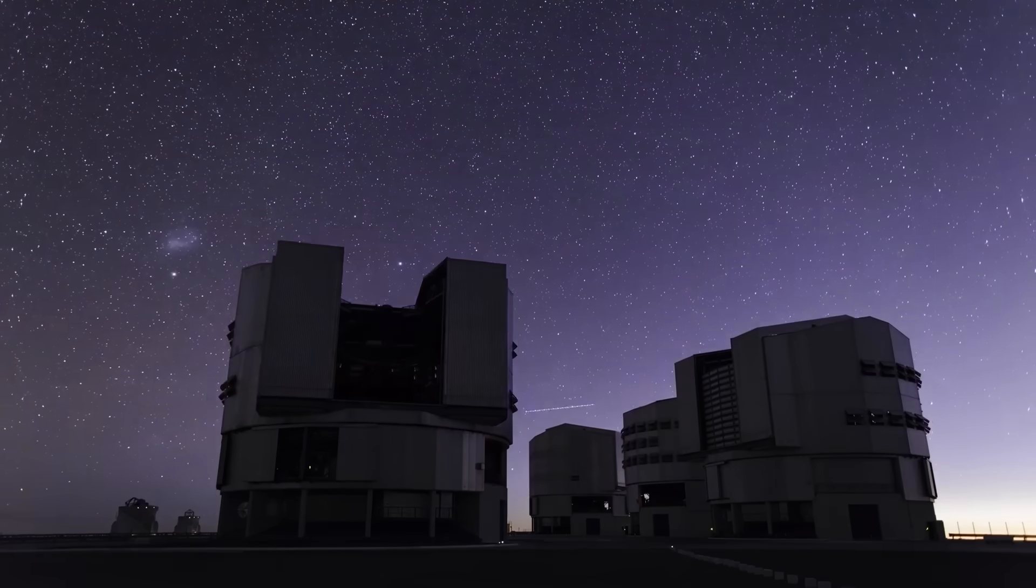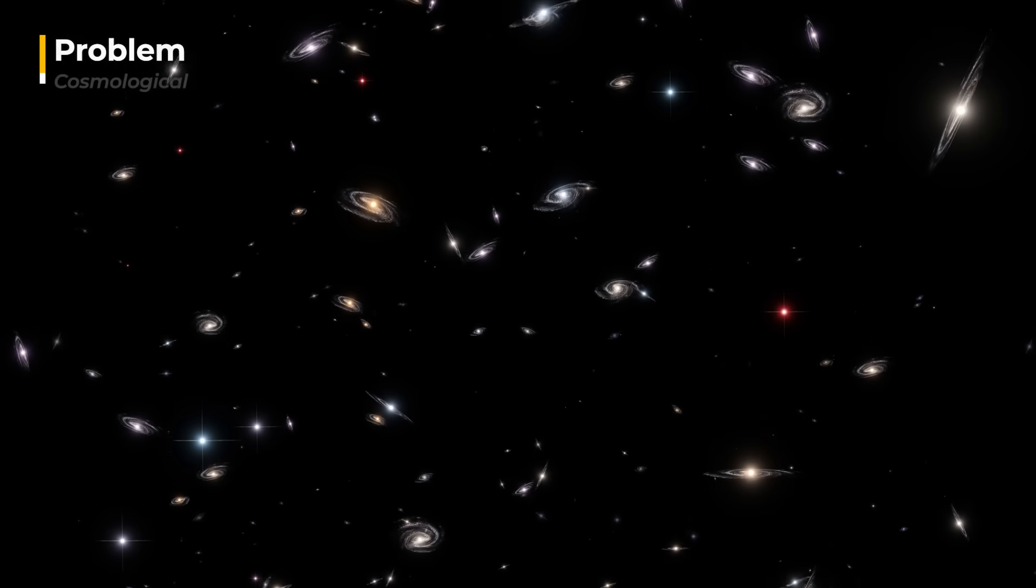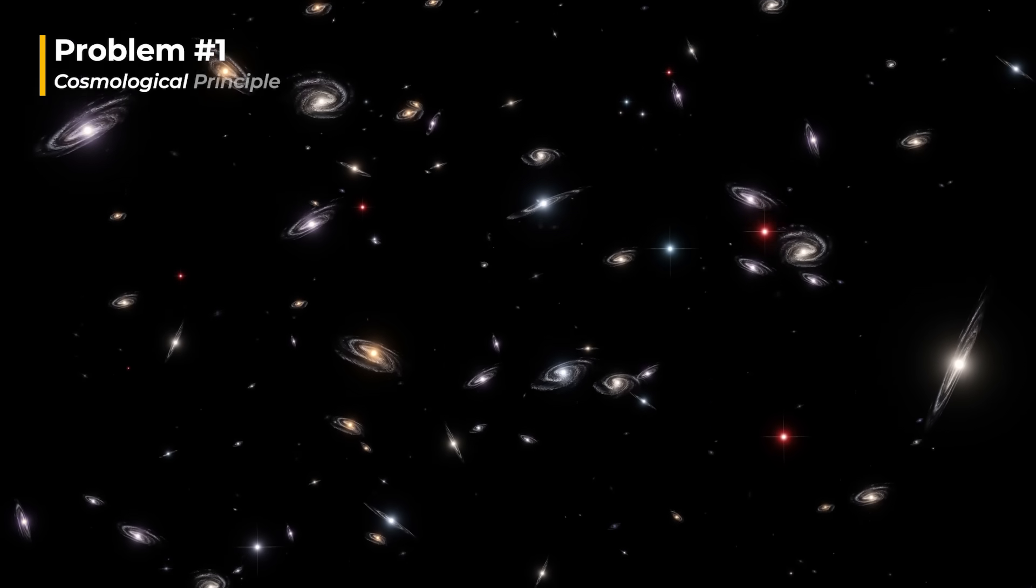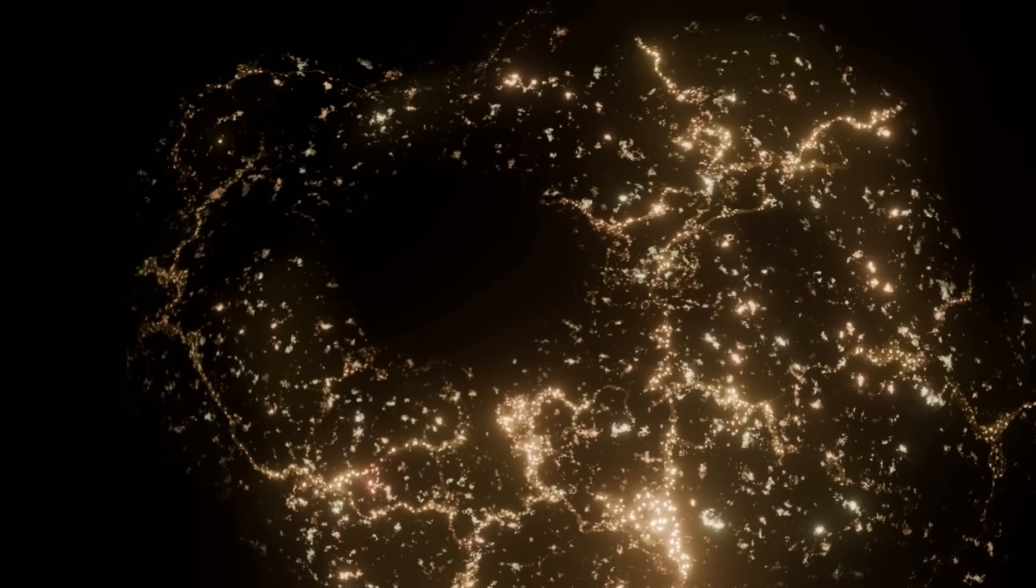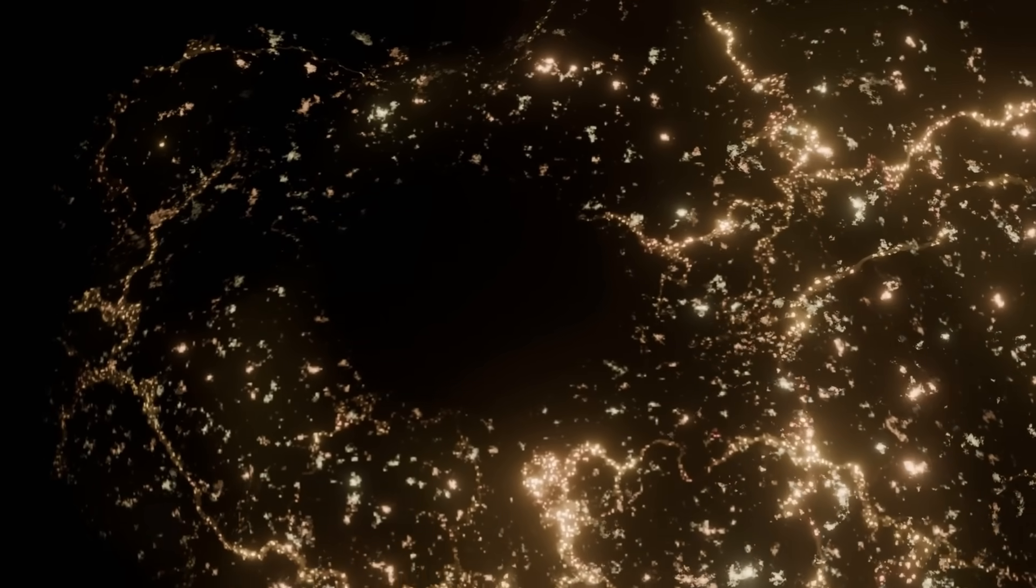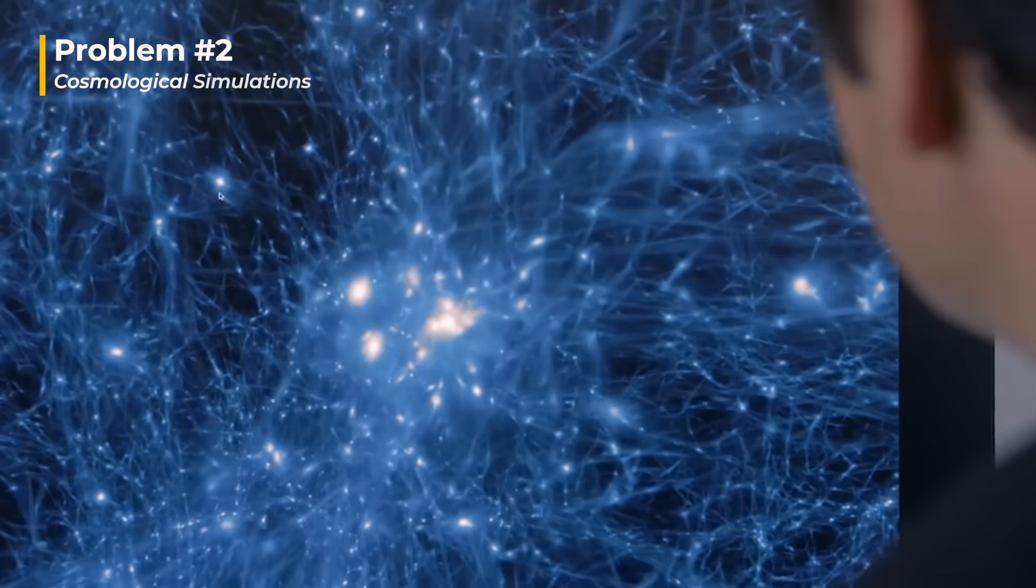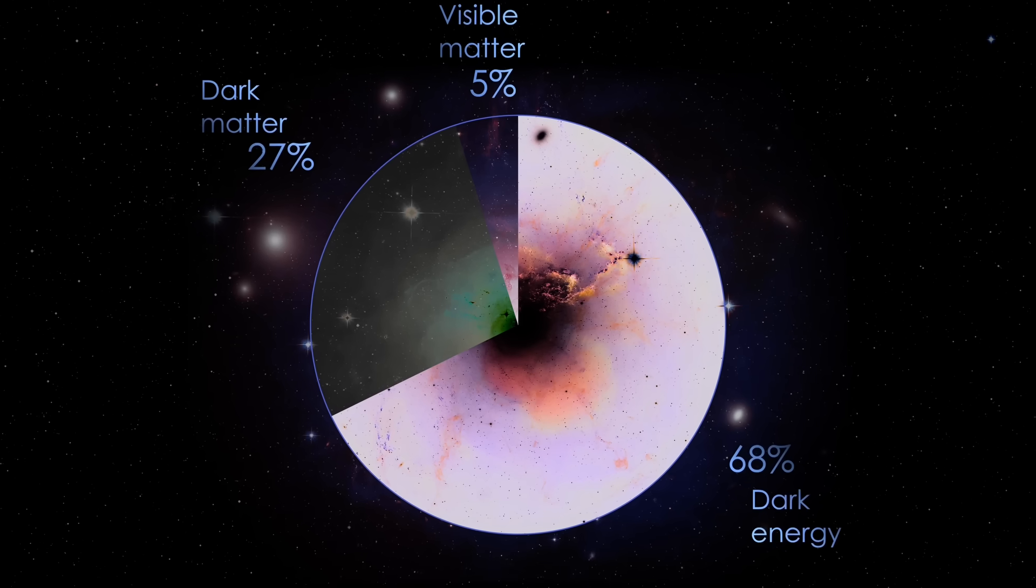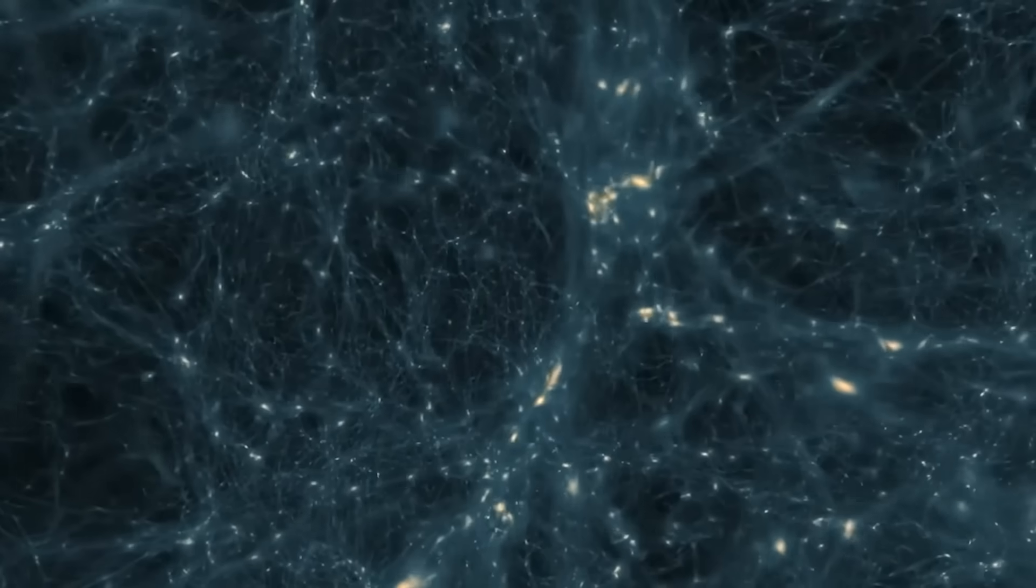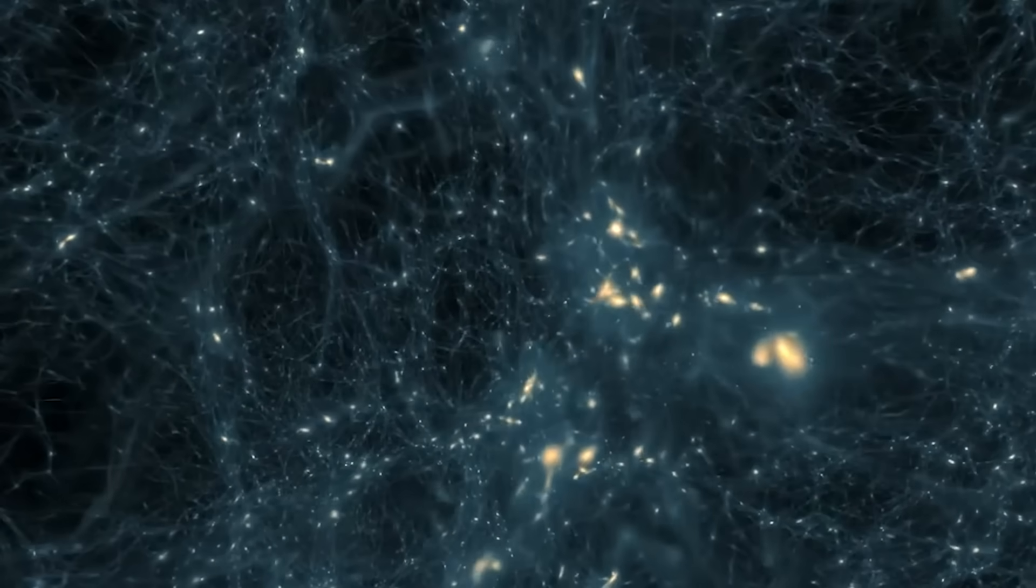At first, researchers met the idea of the existence of such a void with doubt because it poses significant challenges to the standard model of cosmology. There are two main problems. The first is the cosmological principle. The significant lack of galaxies in the local hole challenges the idea that matter is evenly spread across the universe, a key assumption in our current understanding of cosmology. The second problem is simulations. Cosmological simulations like the MXXL simulation suggest that forming a void as large as the KBC void is unlikely under our currently accepted Lambda CDM model of the universe. According to these simulations, the gravitational forces predicted by this model aren't strong enough to create such a vast and deep under-density.